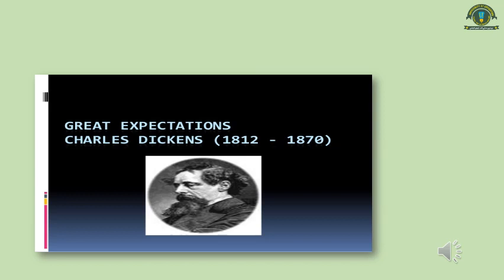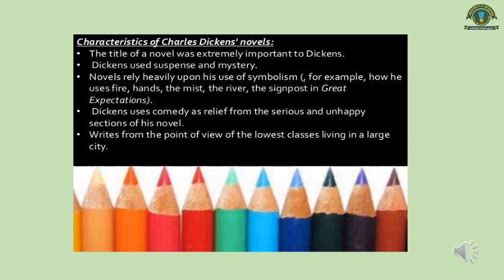Now let us see some important characteristics of Dickens' novels. In these slides you see some characteristics of his novels. First, the title of the novel was extremely important to Dickens. While he selected a title, he always kept in mind what the title is for and what are the important perspectives behind it. Second, Dickens used suspense and mystery — there is always a mixture of mystery and suspense in his writing.